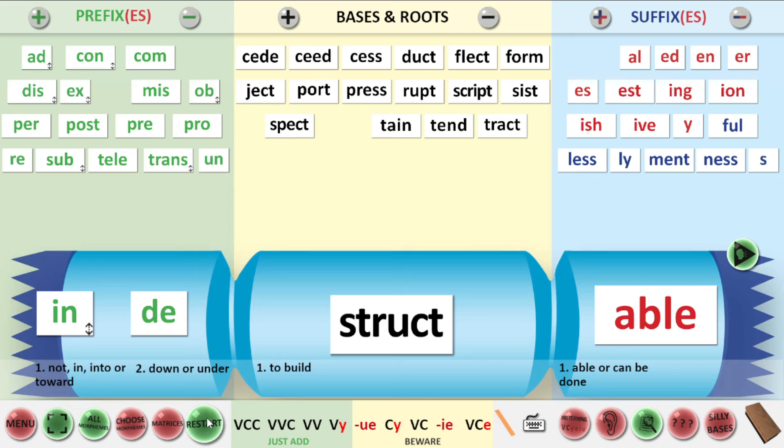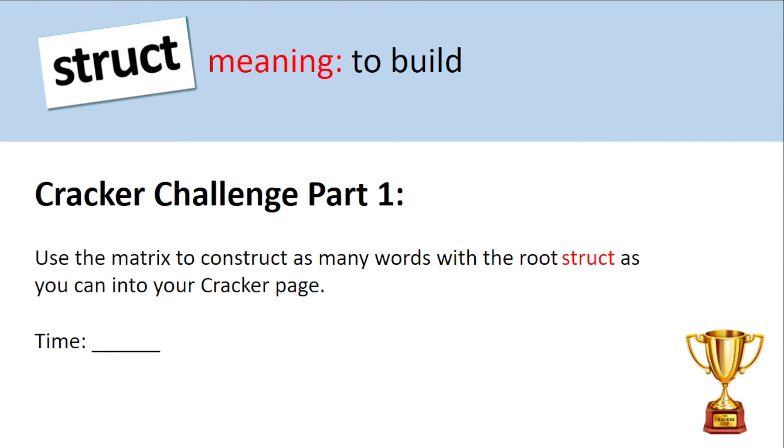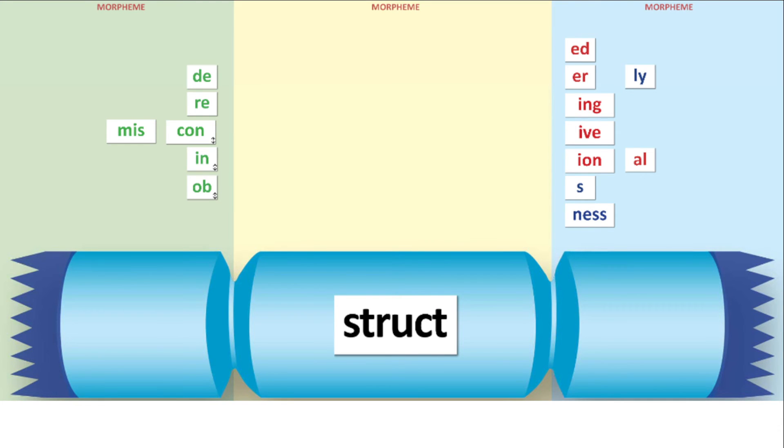So the bit you've been waiting for after that hard sweat of building these struct-based words around meaning, we are up to cracker challenge part one. So can you please make sure you've got with you your cracker recording sheet? And it is going to be your task to build or construct as many words as you can, containing the root struct as you can. Now, teacher, you're going to decide on how long they've got to do it. And teacher, you are also going to decide whether students can be looking at the matrix for struct while they do this or not. So when your teacher is ready to start the timer, it is your job to construct as many words as you can with the root struct.